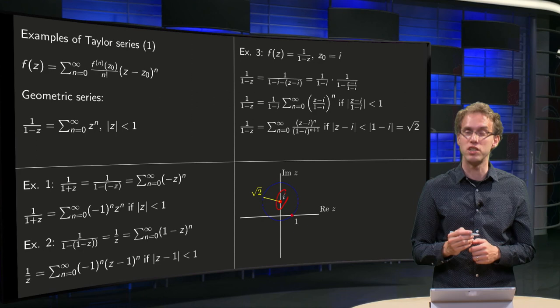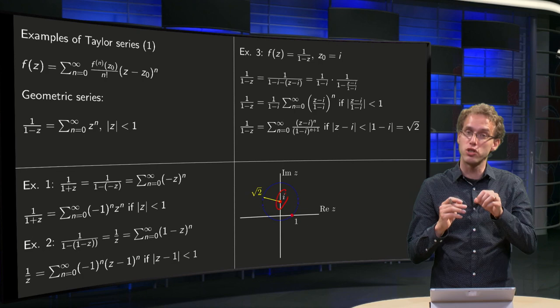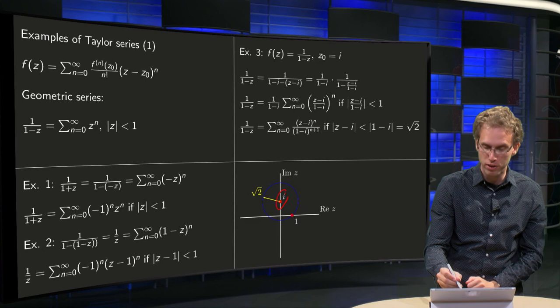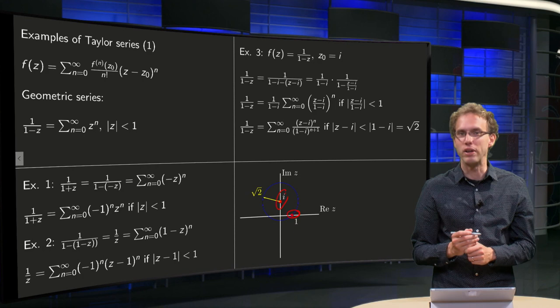Our radius of convergence is √2. So our power series converges in a disk around i with radius √2. So we converge exactly up to the point z = 1.